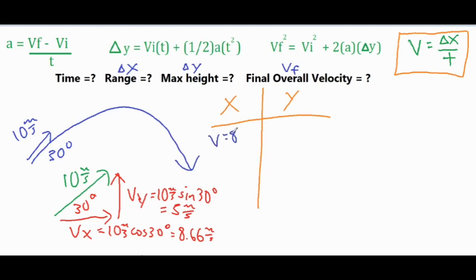We can place those two into our x and y columns. We have a velocity of 8.66 meters per second which is constant the entire time, and an initial velocity of 5 meters per second in the y direction. Once it's projected into the air, it's in free fall with acceleration of negative 9.8 meters per second squared. When it comes back to ground level, the final velocity is going to be the same as the initial but going downward, so negative 5 meters per second.